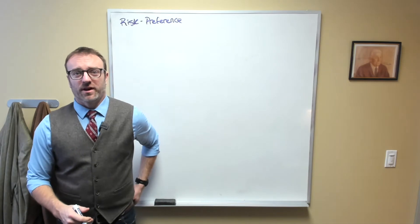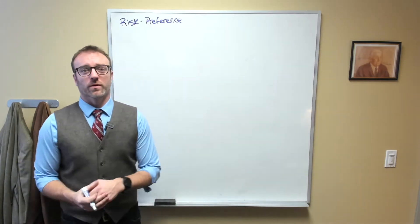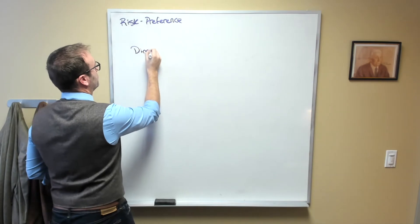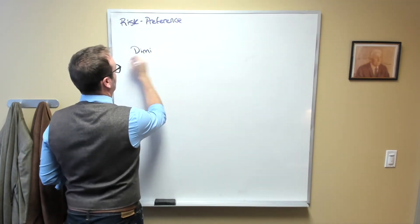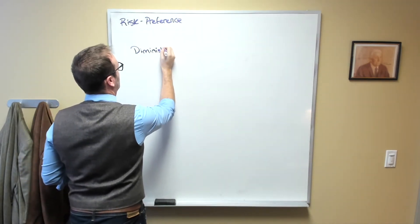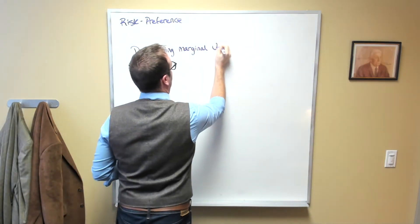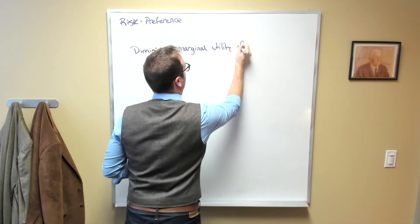One of the great insights from 19th century economists all over Europe was that there exists what we call the diminishing marginal utility of income.